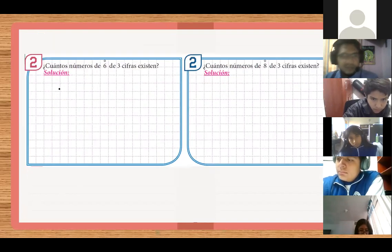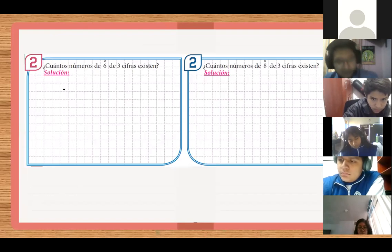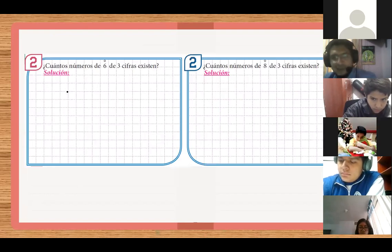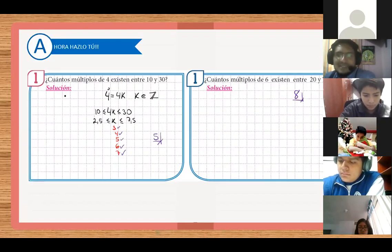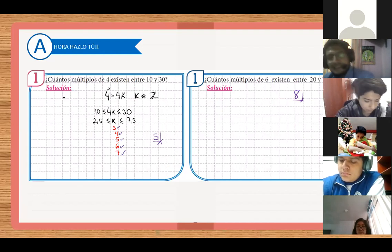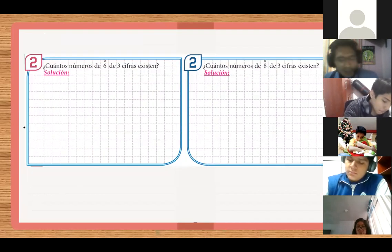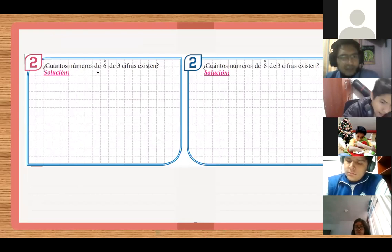Problema 2. Dice, cuántos números múltiplos de 6 de 3 cifras existen? Entonces, números de 3 cifras, cómo los represento? Entre dónde y dónde tendrían que estar? Desde el 100 hasta el 999. Claro, hasta el 999.